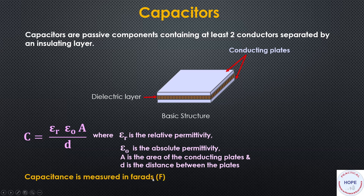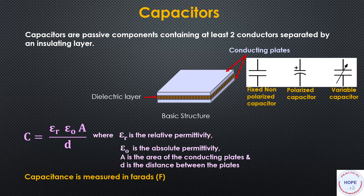Capacitance is measured in farads. The symbols used are: the first is that of a fixed non-polarized capacitor, the second symbol is of a polarized capacitor, and the third symbol is of a variable capacitor.